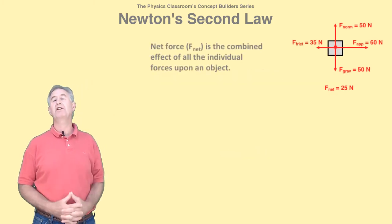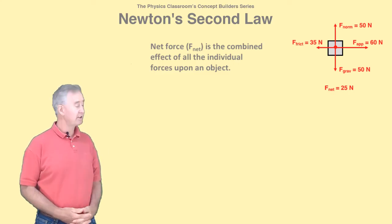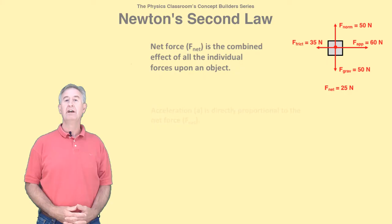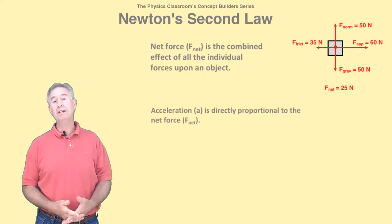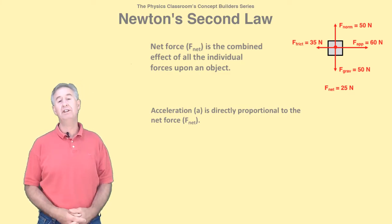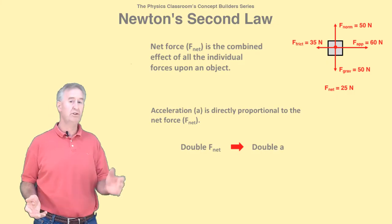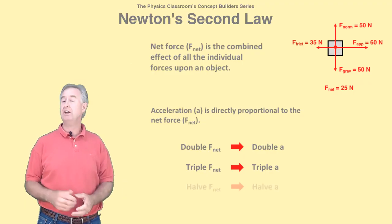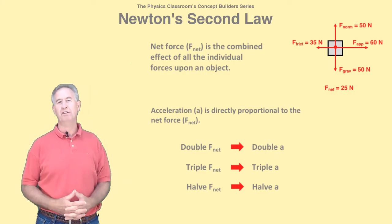Let's begin with the acceleration–net force relationship. The net force, or F net, is the combined effect of all the individual force vectors. The acceleration is directly proportional to the net force. This means that whatever change you make in the net force, the same change is made in the acceleration. If you were to double the F net, you'd double the acceleration. Triple the net force, you'd triple the acceleration. And half the net force, you'd half the acceleration, and so forth.